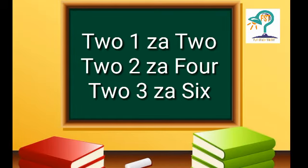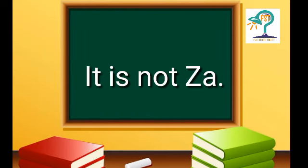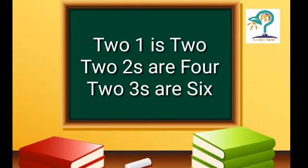We say it like: two ones are two, two twos are four, two threes are six, and so on. I never thought about what 'two ones are two' really means. One day I realized — why do we say 'two ones are two'? When I asked my friends and colleagues, I understood it should be 'two one is two, two twos are four.'